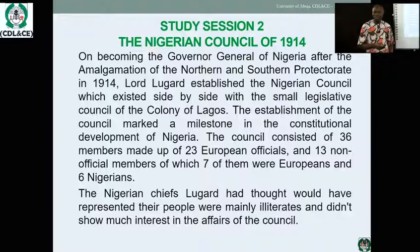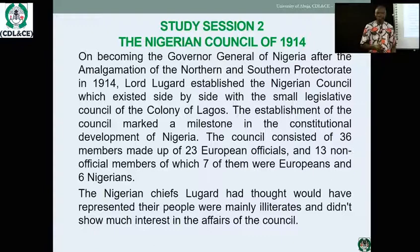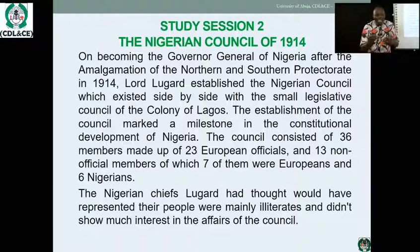It was this crisis, this complaint, and this agitation that led Clifford to establish the Clifford Constitution of 1922. By 1922, Nigerians could no longer accept the status quo — there was a need for a new constitution, a reform, and a platform where issues would be raised. The 1914 constitution collapsed because of its inability to genuinely bring Nigeria together to discuss serious issues of national development.